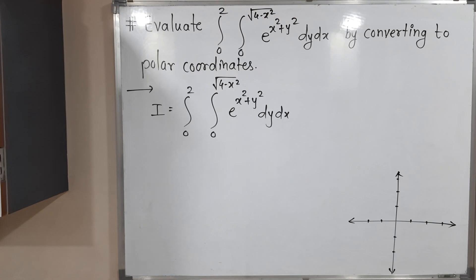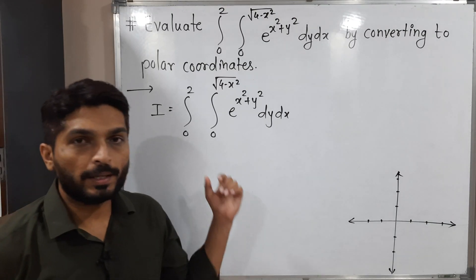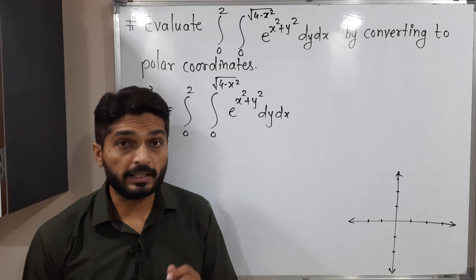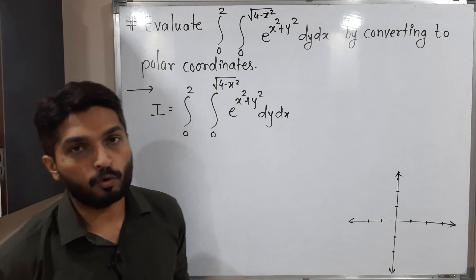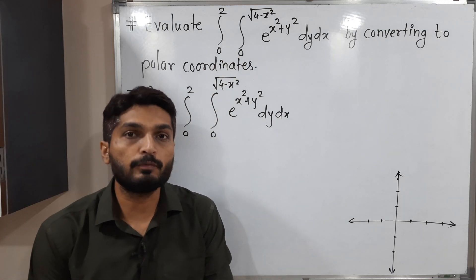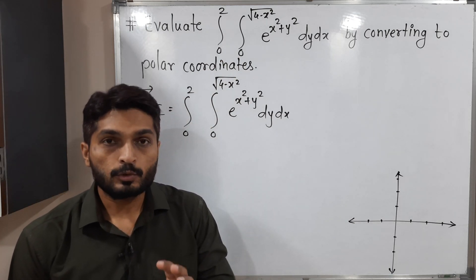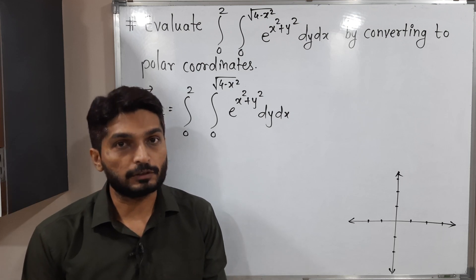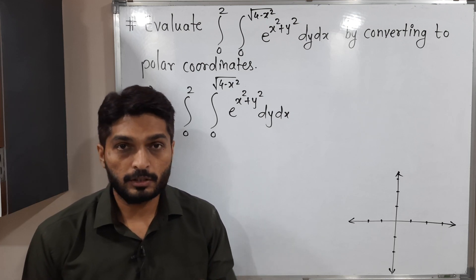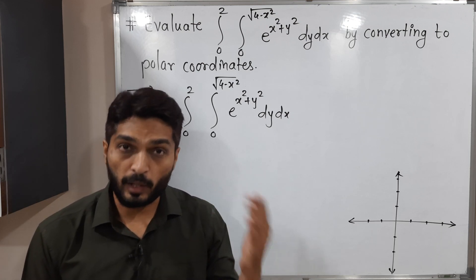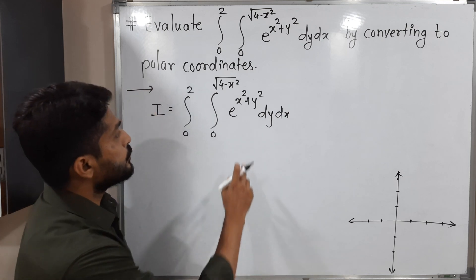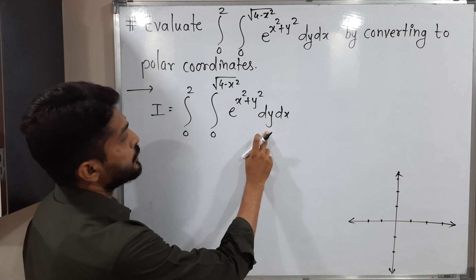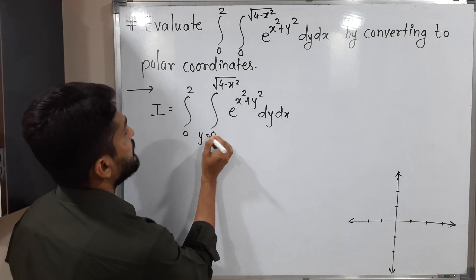In this video we are going to discuss this example where we have to solve a double integration. The condition is that we have to convert the problem into polar coordinates and then find its value. We will first find the region of integration, then convert the problem into polar form, and then solve it. The inner integration is with respect to y, so these are the limits of y.